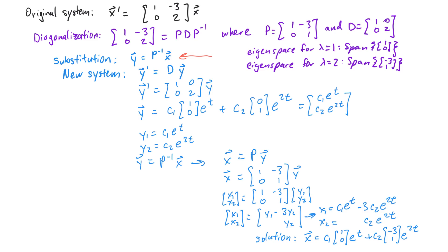Again notice the pattern: for eigenvalue λ = 1 we have e^t and eigenvector [1, 0] appearing in the solution, and for eigenvalue λ = 2 we have e^(2t) and eigenvector [-3, 1]. This is the general pattern — I'll state this result formally in the next video and look at more examples.